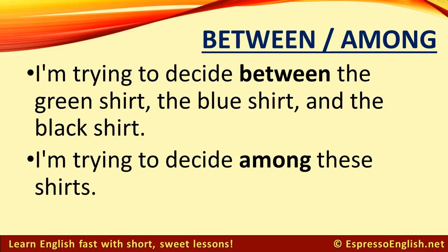Here's another example. I'm trying to decide between the green shirt, the blue shirt, and the black shirt. Again, we can use between with two, three, four, or more individual items, as long as we name them specifically. But if we refer to them as a group, then we should use among: I'm trying to decide among these shirts.